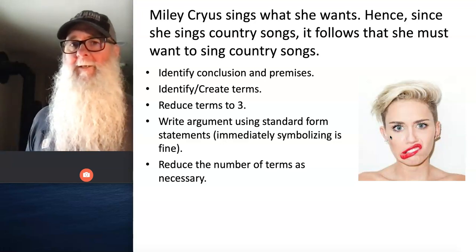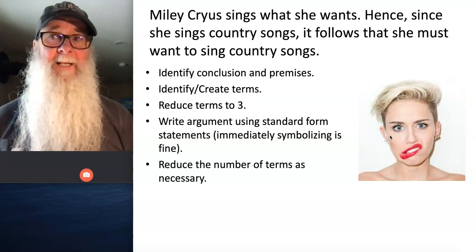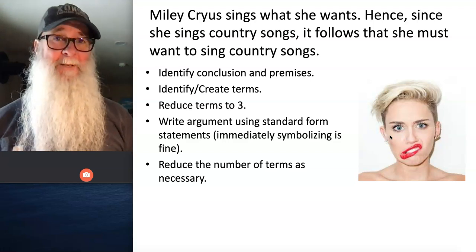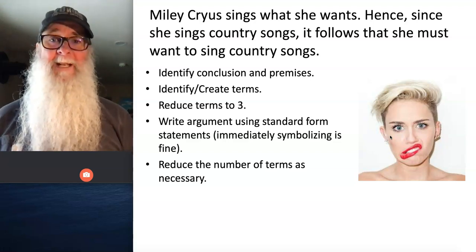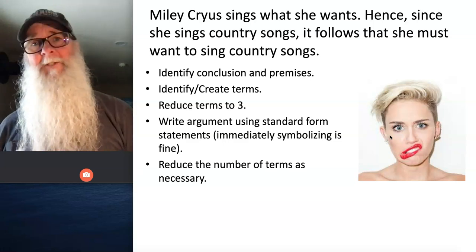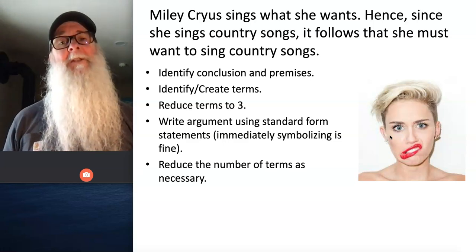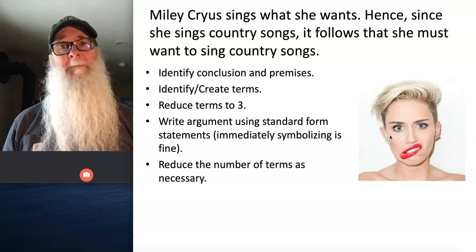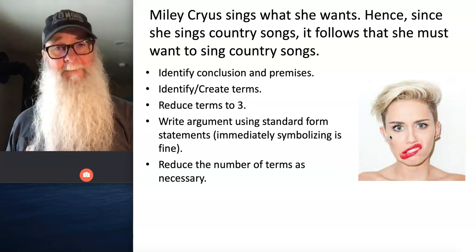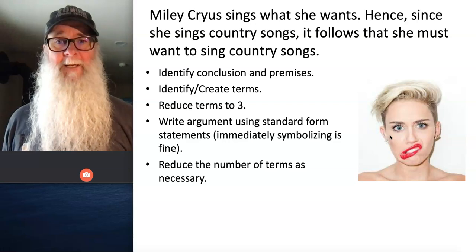After you symbolize the argument in standard form statements, you may find that you have some term complements in the argument. If that's the case, you want to use the operations of conversion, obversion, or contraposition to reduce down the number of terms to three. You want three terms that appear exactly two times each, the same way each time they appear.